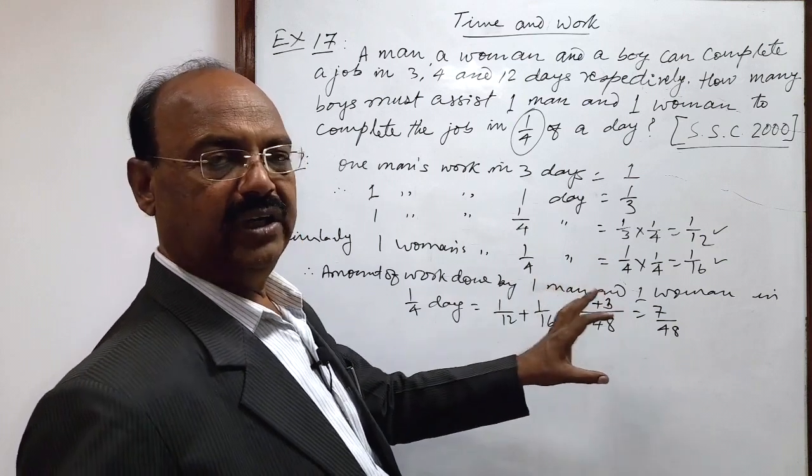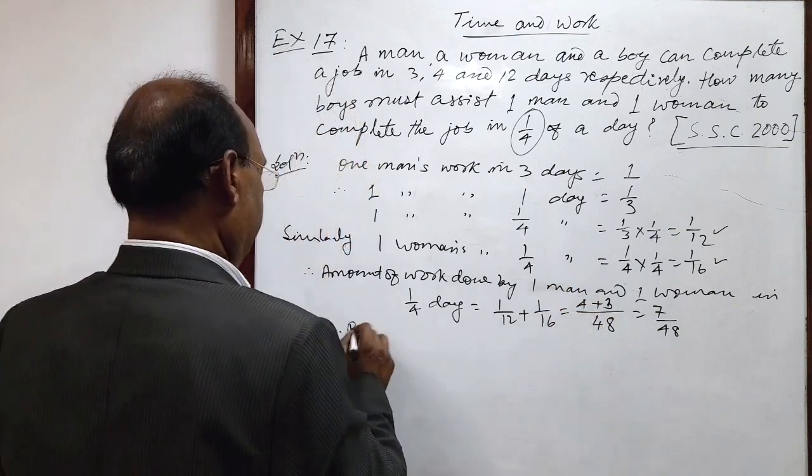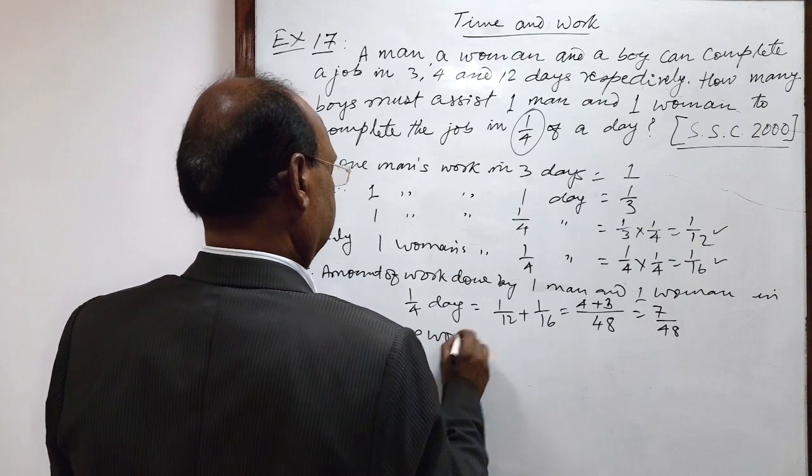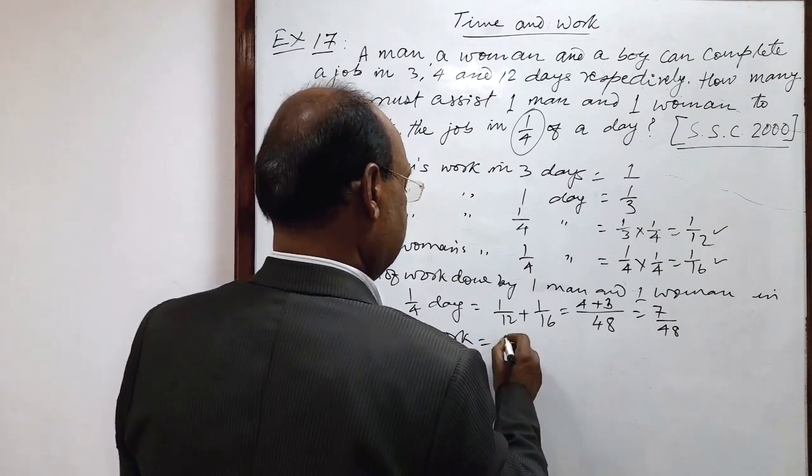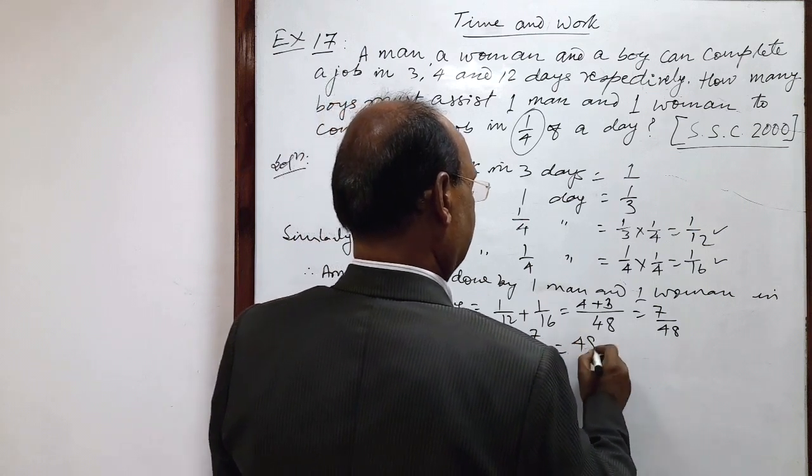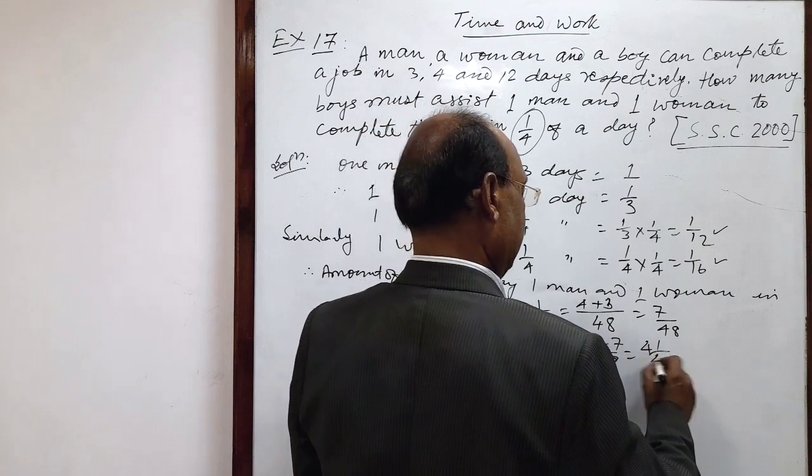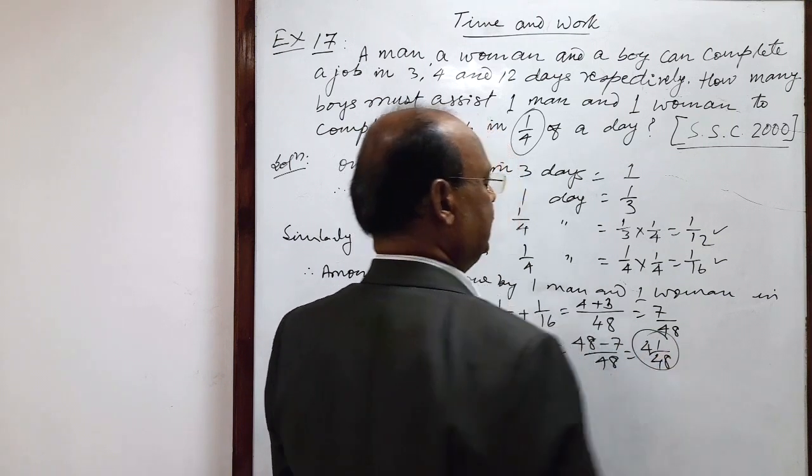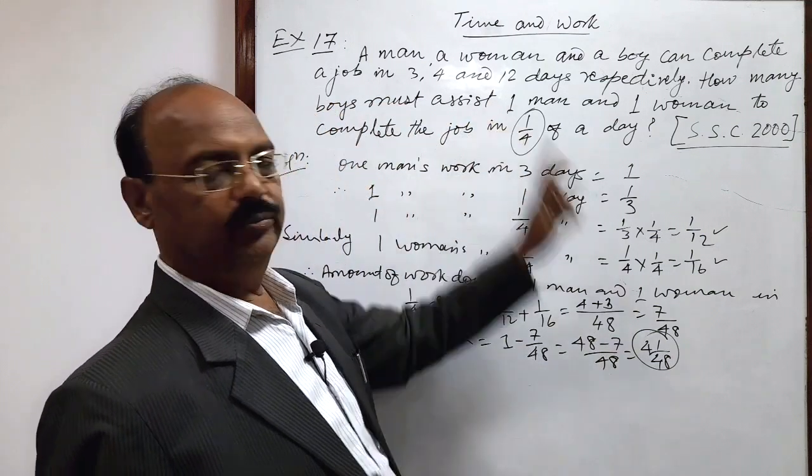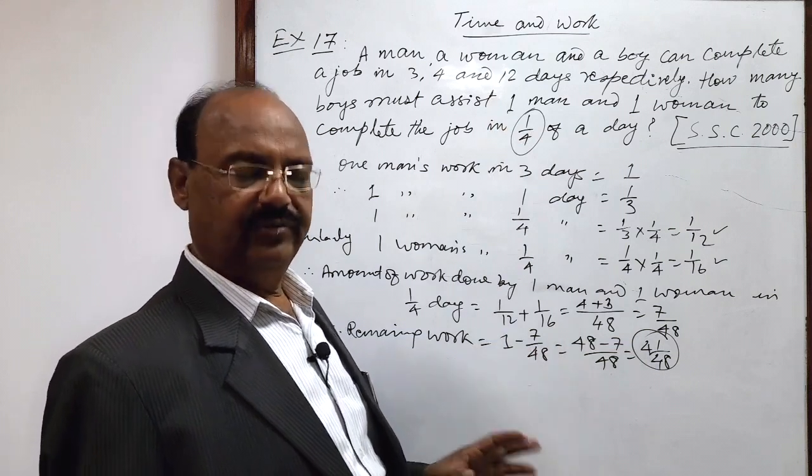So, what is the remaining work, which will be completed by the boys? So therefore, remaining work: 1 complete work minus 7 by 48, so 48 minus 7 by 48, this is equal to 41 by 48. This much amount of work has to be completed by boys in the same period of time, 1 by 4th of the day.